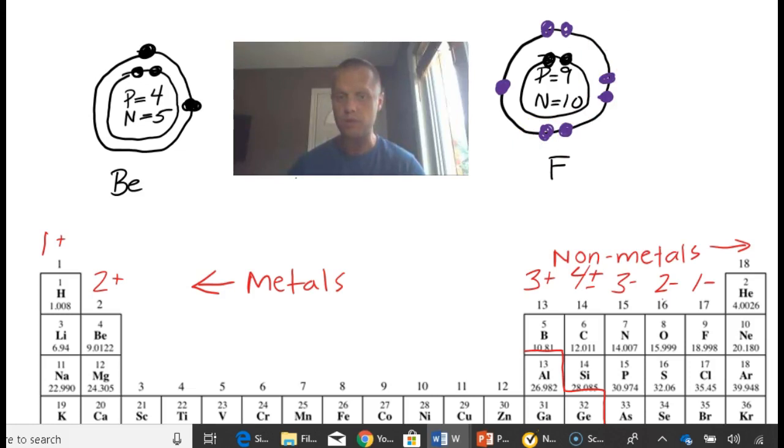Beryllium wants to get rid of its two electrons that are on the outermost side, which is up here somewhere. These guys out here. And on the other side, we have fluorine, which wants to gain one electron. Beryllium is going to form a two-plus charge, and fluoride is going to form a negative one charge.